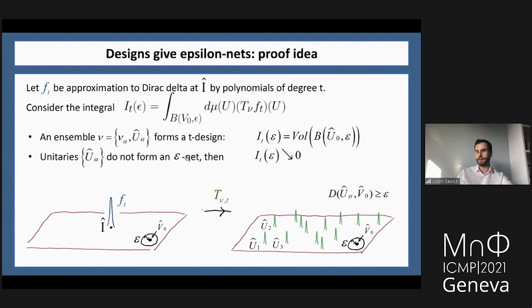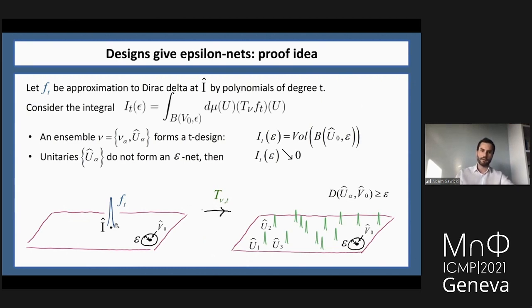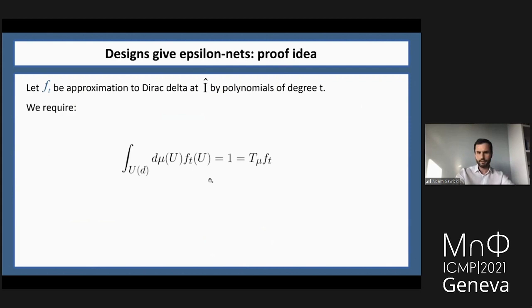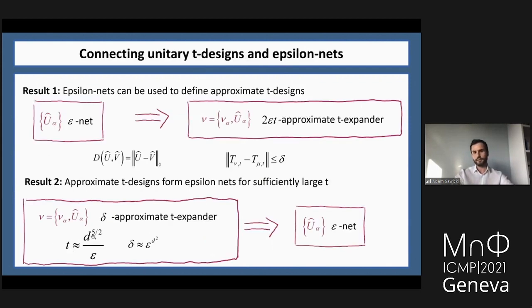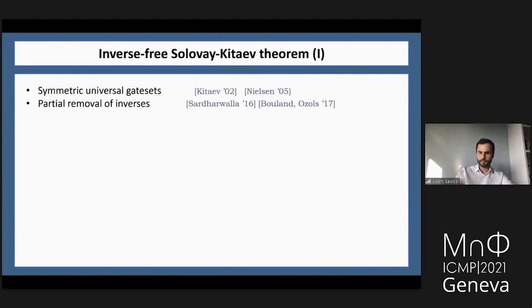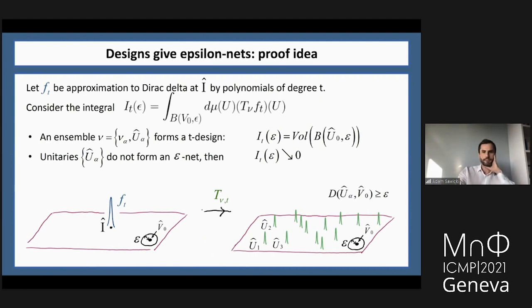Using harmonic analysis to find the best polynomial approximation of the Dirac delta up to degree T, we get the relation that T scales like d/ε. This completes the proof idea behind result number two.